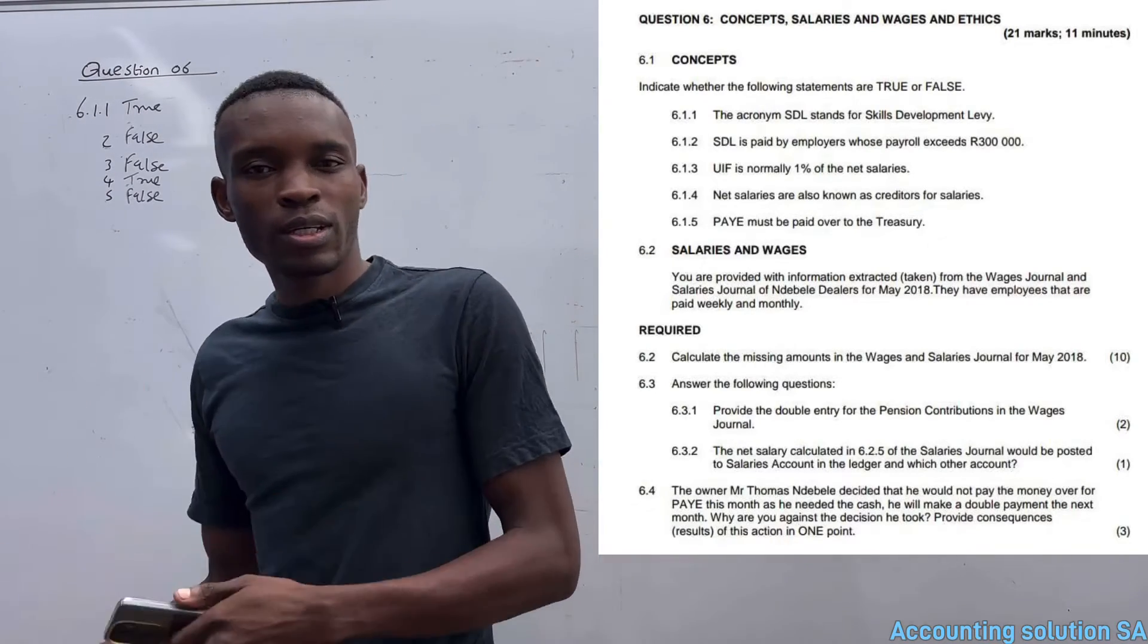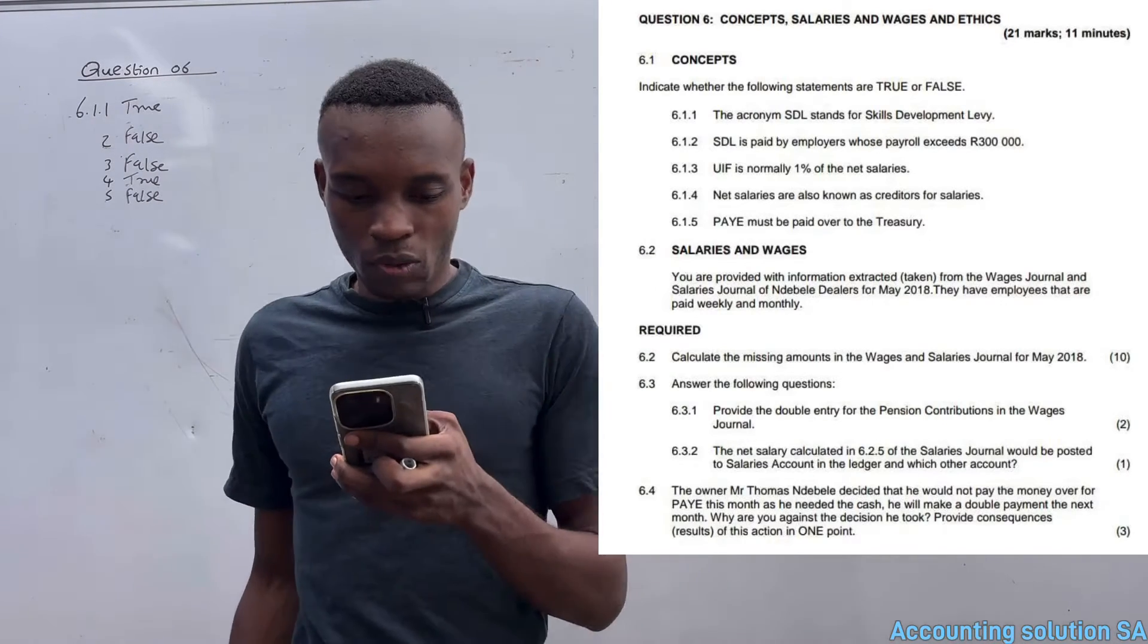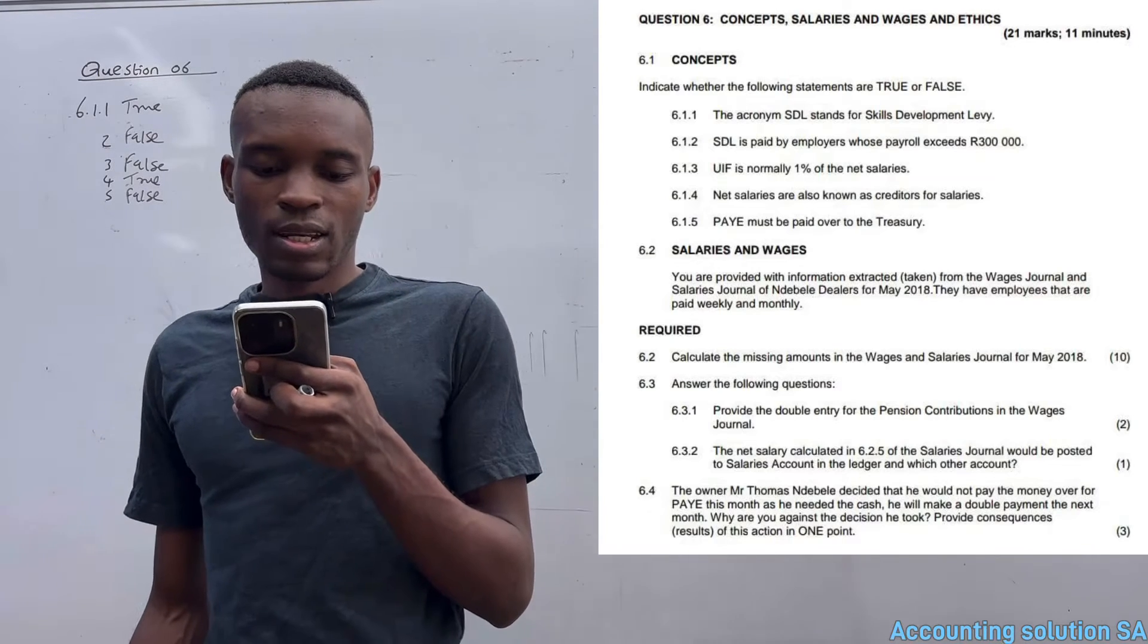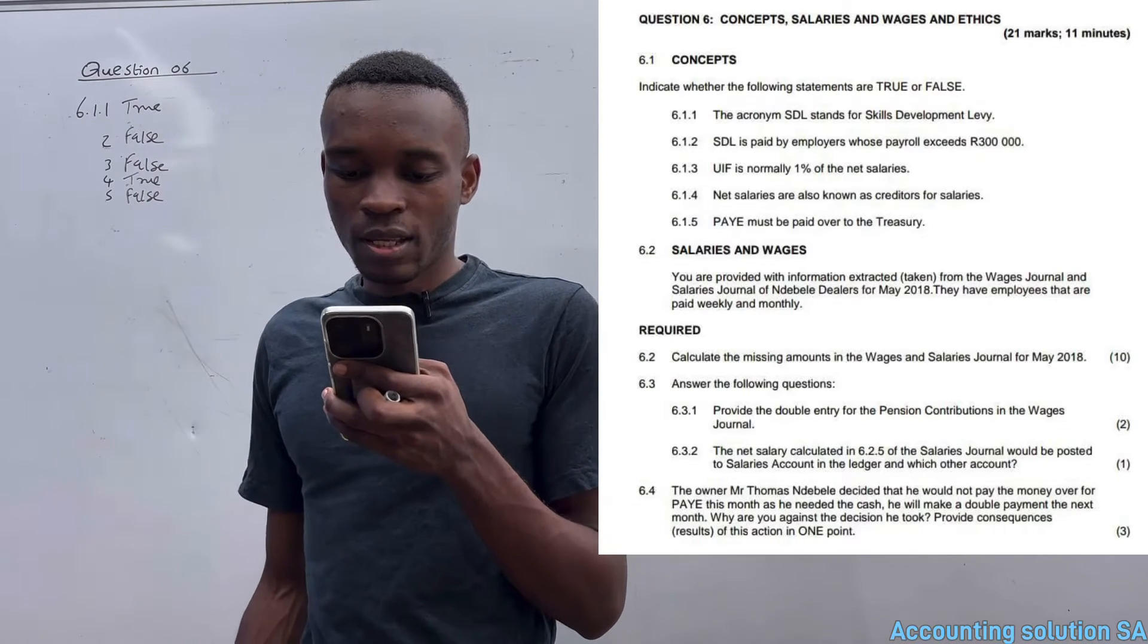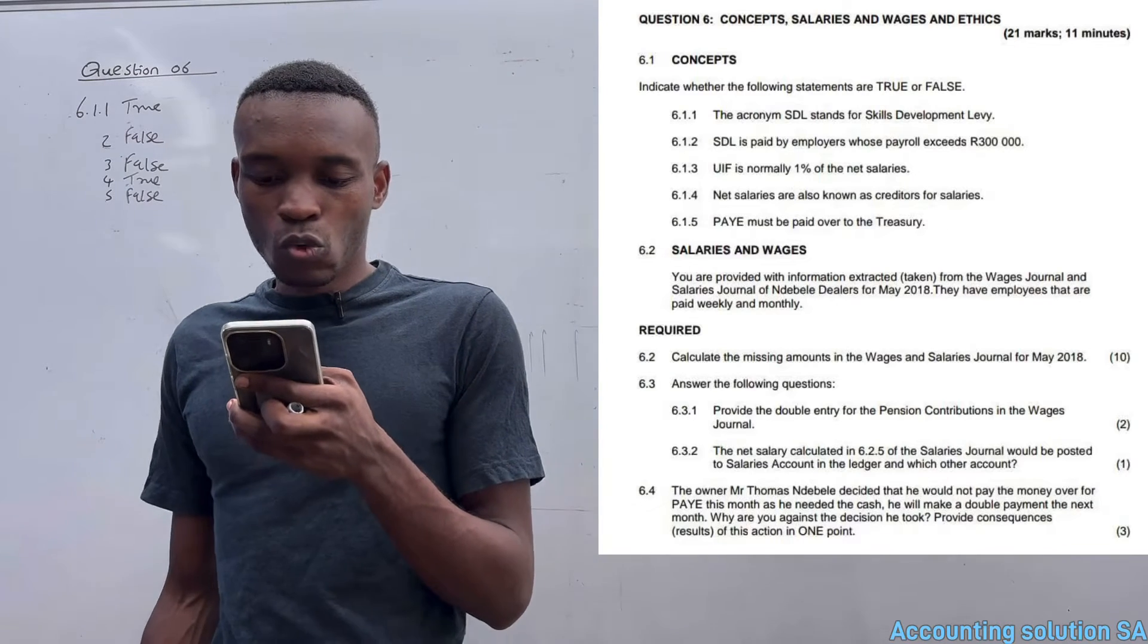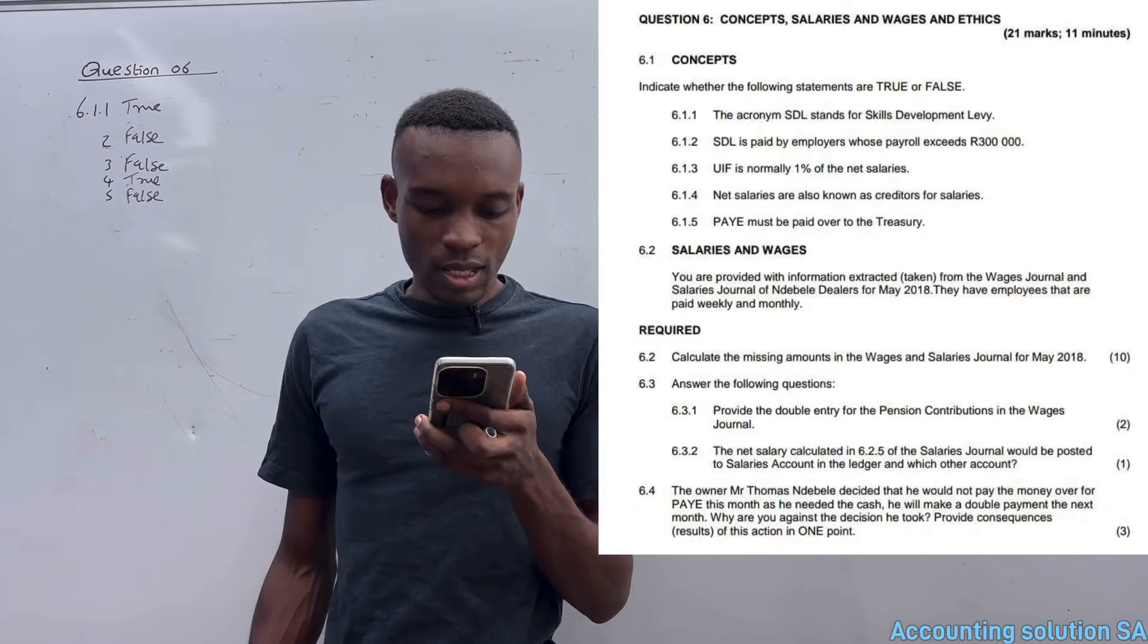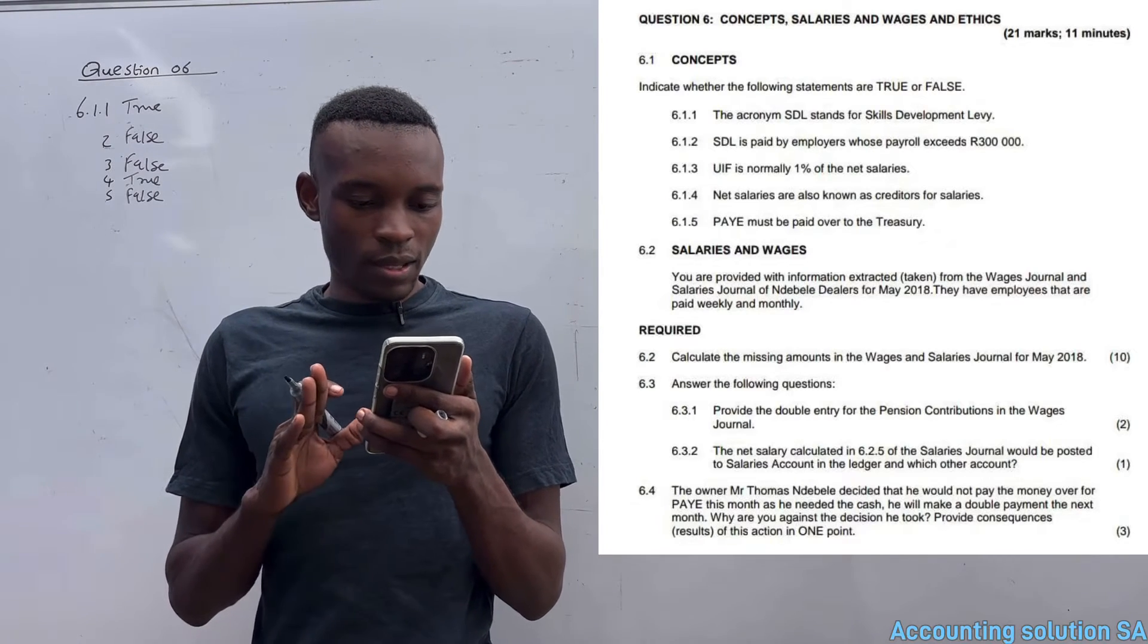6.2 - You are provided with information extracted from the Wages Journal and Salaries Journal of Dealers for May 2018. They have employees that are paid weekly and monthly. 6.2.1 says calculate the missing amounts in the Wages and Salaries Journal for May 2018.